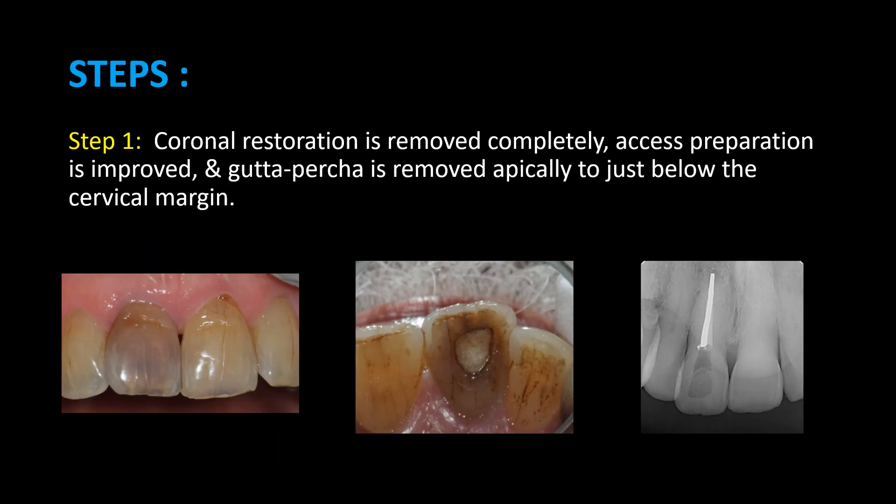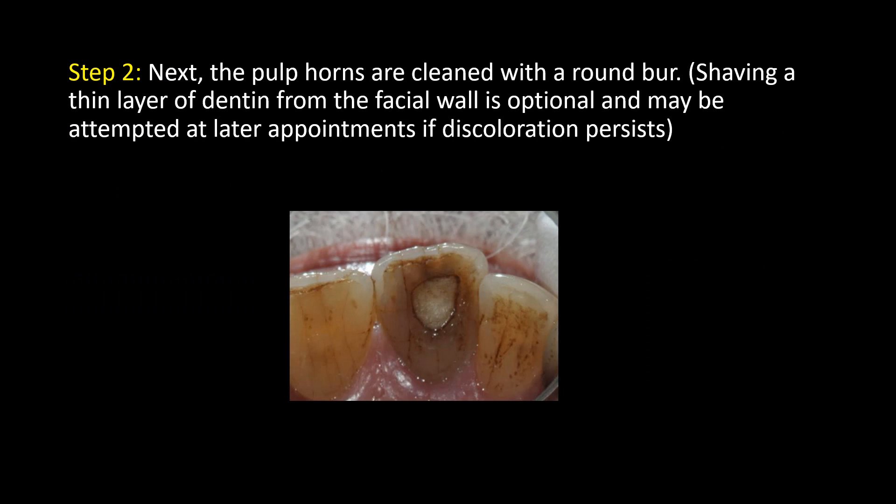Procedural steps: Step 1 — The coronal restoration is removed completely, access preparation is refined, and gutta-percha is removed apically to just below the cervical margin. Step 2 — The pulp horns are cleaned with a round burr. Shaving a thin layer of dentin from the facial wall is optional and may be attempted at later appointments if discoloration persists.